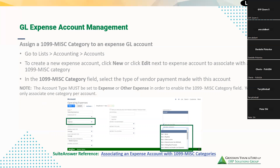Another tool NetSuite has to offer for 1099 management is the ability to assign a 1099 misc category to a GL account. When setting up your chart of accounts or creating a new expense account in NetSuite, if you select the account type expense or other expense, there is a field available for 1099 misc category. This is where you select which box the associated expenses fall under, and the custom safe searches will pull the particular dollar thresholds for that 1099 eligible contractor within those boxes.